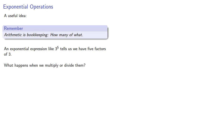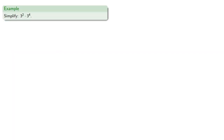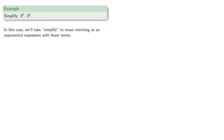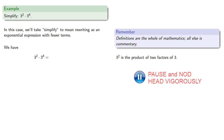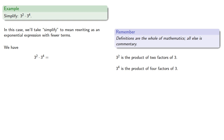What happens when we multiply or divide them? For example, let's try to simplify the product 3 to the second times 3 to the fourth. We'll take 'simplify' to mean rewriting as an exponential expression with fewer terms. Remember, definitions are the whole of mathematics — all else is commentary. 3 to the second is the product of two factors of three, and 3 to the fourth is the product of four factors of three.